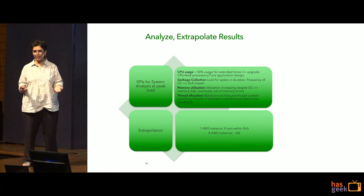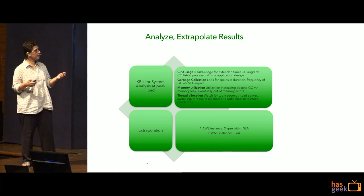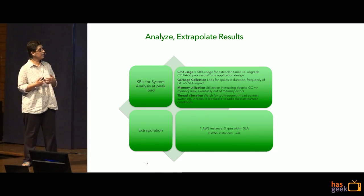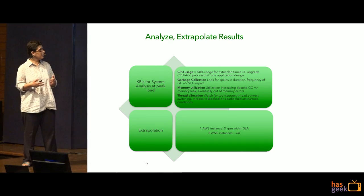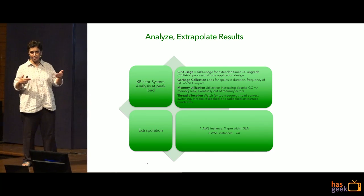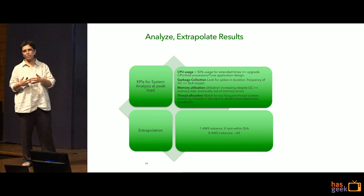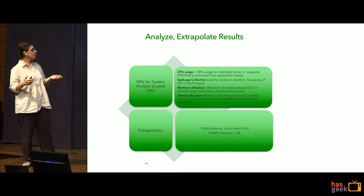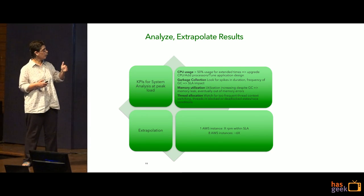What happens when you actually see any of these markers or alerts? If CPU usage is exceeding 50% for an extended time period, you may need to upgrade your CPU, add more processors, or fine-tune your application. If you see lots of spikes in duration or frequency of GC, you know that's going to have an SLA impact, so you need to drill down further — is memory utilization increasing despite GC? That means you probably have a memory leak somewhere and will eventually run out of memory. For thread allocation, watch out for too frequent context switches and watch for anything in a blocked state, which may indicate race conditions.